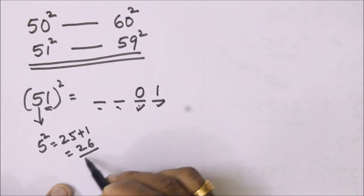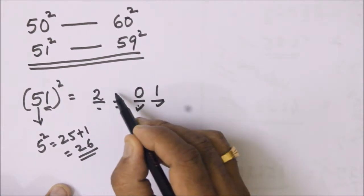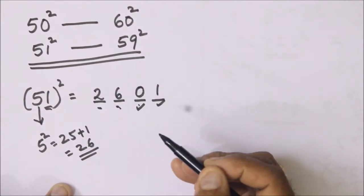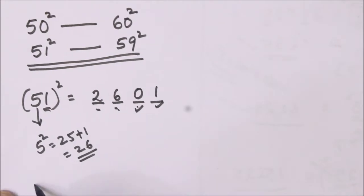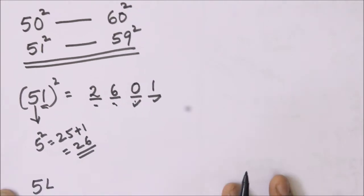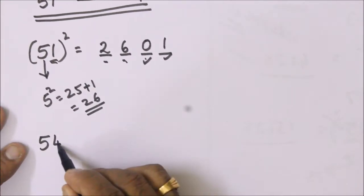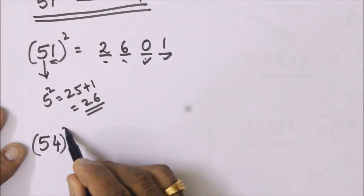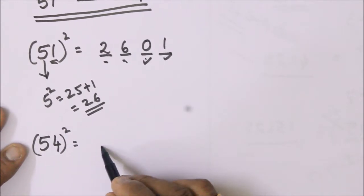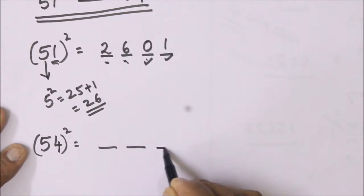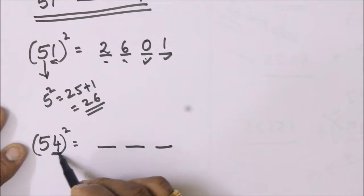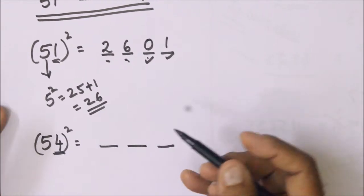Let's take another number 54. 54 square also has 4 digits. We see the same rule. We take the square of 4 which is a two-digit number, that is 16. So that takes units and tens.